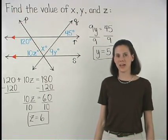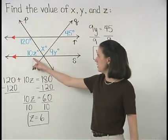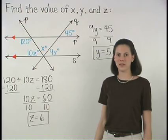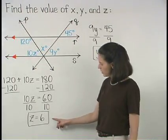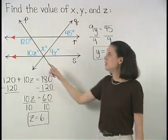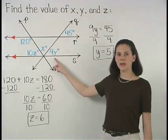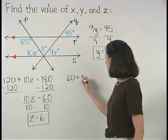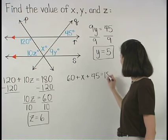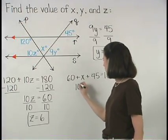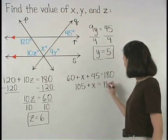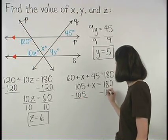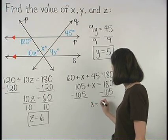Finally, to find the value of x, notice that the angles marked as 10z, x, and 9y form a straight angle, so we know that these angles must add to 180. Since we know that z equals 6, then 10z must equal 60. And since we know that y equals 5, then 9y must equal 45. So we have 60 plus x plus 45 equals 180. Simplifying on the left gives us 105 plus x equals 180, and subtracting 105 from both sides, we find that x equals 75.